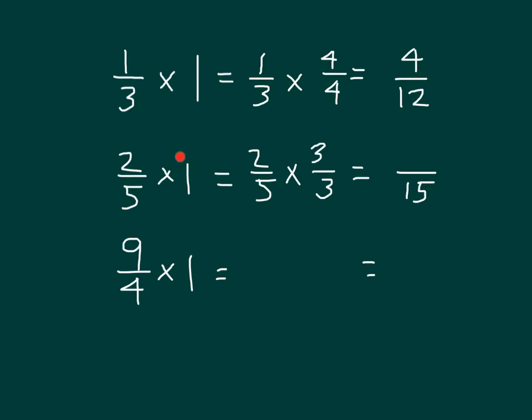In other words, this 1 is also equal to 3 thirds. So that 2 fifths times 3 thirds does equal 6 fifteenths.